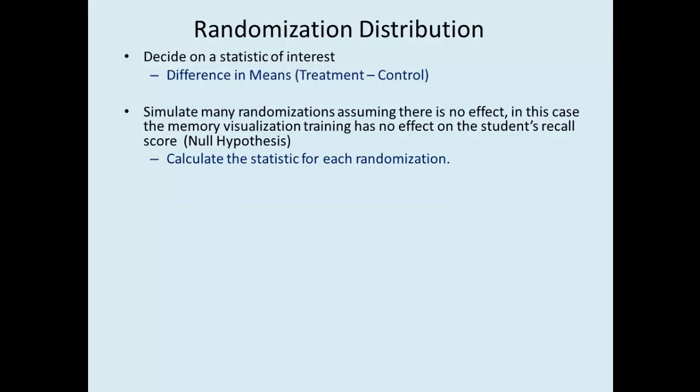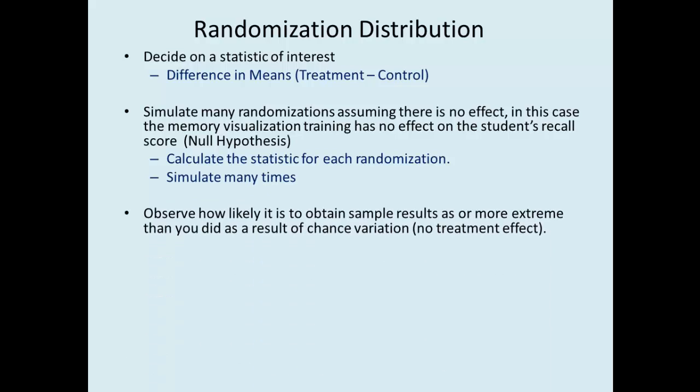We'll calculate the statistic for each randomization under the null hypothesis. We'll simulate this many times. And then we'll observe how likely it is to obtain sample results as or more extreme than we actually did just as a result of chance variation. This is called the p-value.